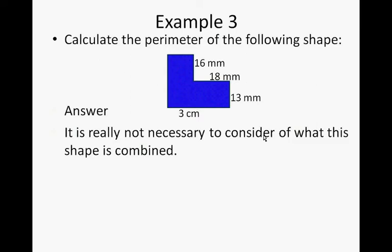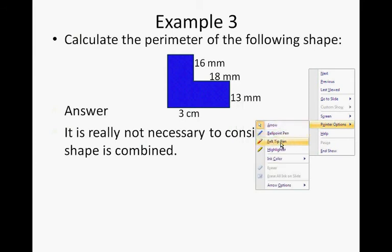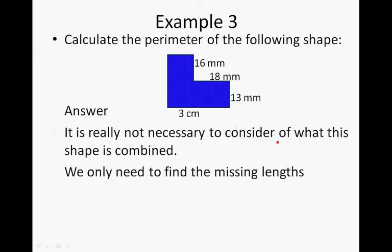It's not really necessary to consider what this shape is combined of. We only need to find the missing lengths. 16 plus 13 gives us 29 mm. So because this is 16 and that is 13, this side is 29.